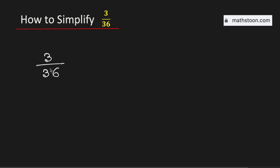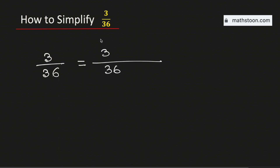Let us simplify the fraction 3 over 36 in its simplest form. See that both the numbers 3 and 36 are divisible by 3. Therefore, to simplify this fraction, we will divide both the numerator and the denominator by 3. And this will give us 1 over 12.